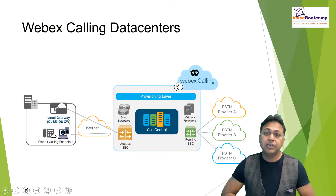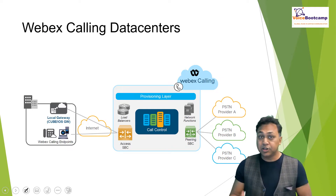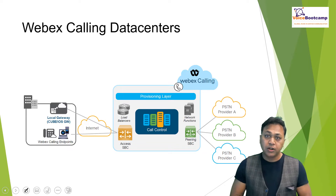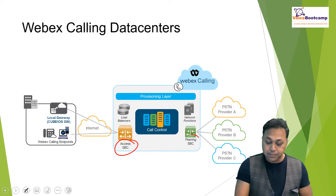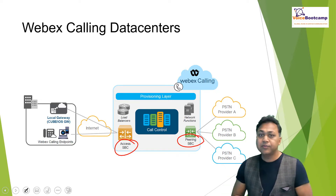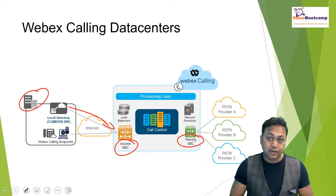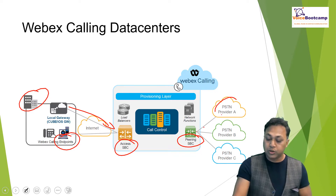Each Webex Calling data center hosts a routing function and provides an interface so that you and I can log in to Webex Calling for our day-to-day administration. The data center also hosts two types of SBC: access SBC and peering SBC. The access SBC basically terminates all the customer-facing SIP trunks coming in to the Webex Calling, including the endpoints. Whereas peering SBC will be terminating communication between the providers.